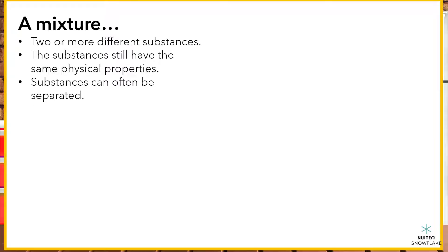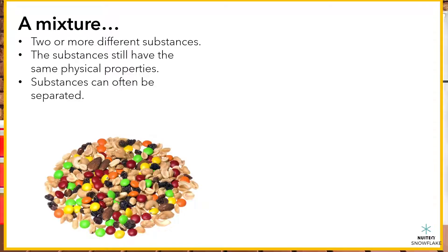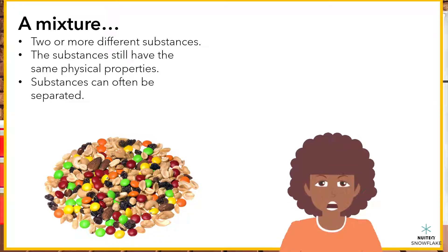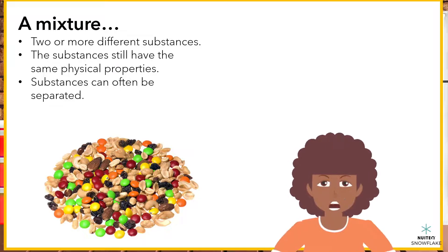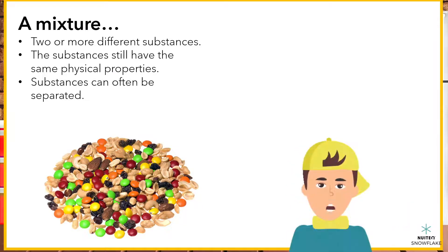Like when I make trail mix as an after-school snack? I use nuts, chocolate chips, raisins, and other dried fruit. Is that a mixture? Exactly. It is a mixture, because the physical properties did not change for each of the ingredients, and you can identify and separate the different ingredients. I like to separate the chocolate and save it for last — it's my favorite part.